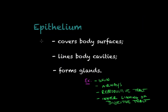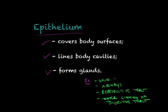The epithelium is the first of the four basic tissue types found in humans and animals. Epithelial cells can be found covering body surfaces, lining body cavities, and also forming glands. Some examples where you can find epithelium are skin, airways, the reproductive tract, and the inner lining of the digestive tract.